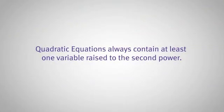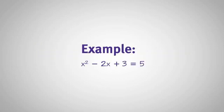Quadratic equations always contain at least one variable raised to the second power. For example, x squared minus 2x plus 3 equals 5.